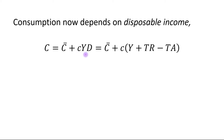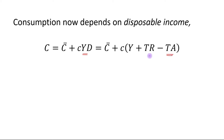Consumption now depends on disposable income. That is, consumption equals autonomous consumption plus MPC times disposable income, where disposable income equals Y plus transfers minus taxes. Disposable income means the income left for consumption purposes after deducting all taxes and after adding all transfer payments.